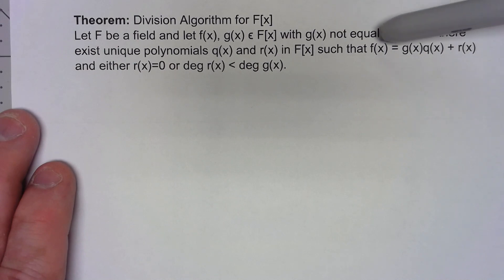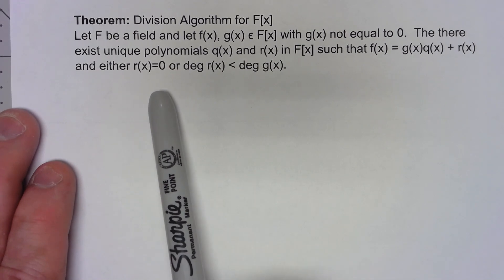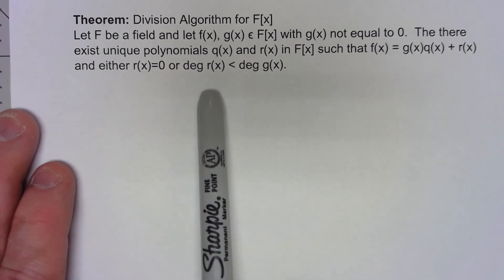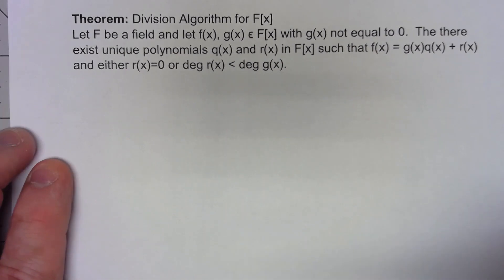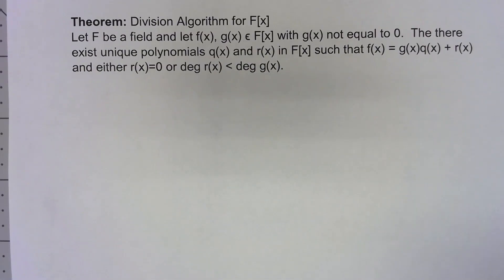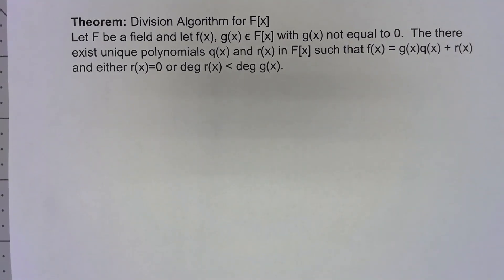We can say that f of x is equal to g of x, the thing I'm basically dividing by, times q of x plus r of x. That remainder is either equal to 0 or it's a polynomial with degree less than the degree of the thing we're dividing by. The proof of this is very constructive, and so rather than actually trying to do it in general, I'm going to go ahead and show how it works for some specific polynomials.